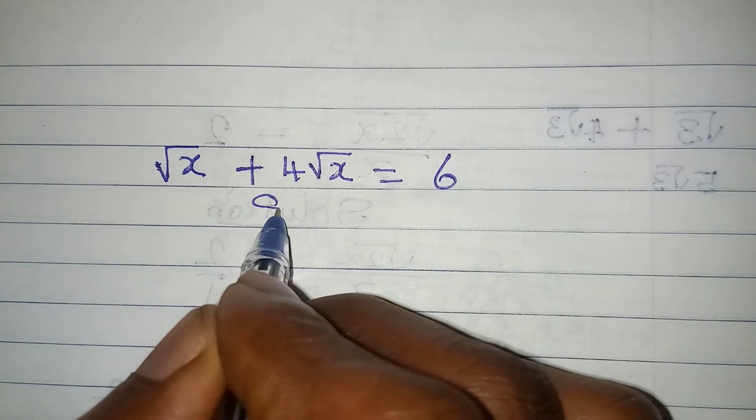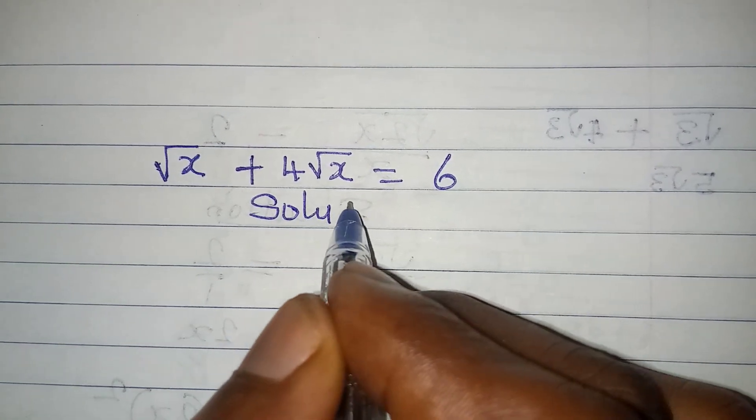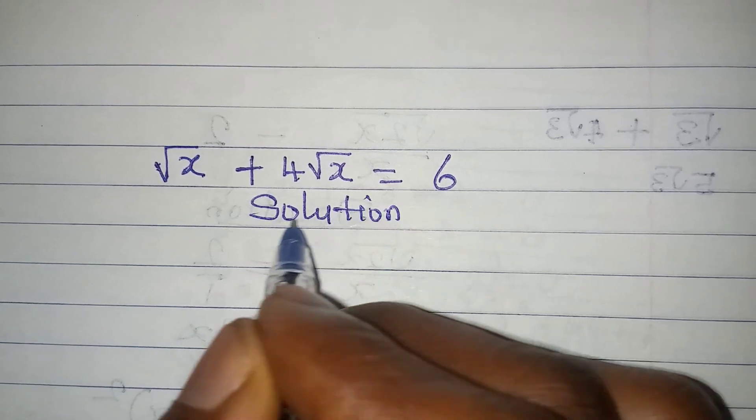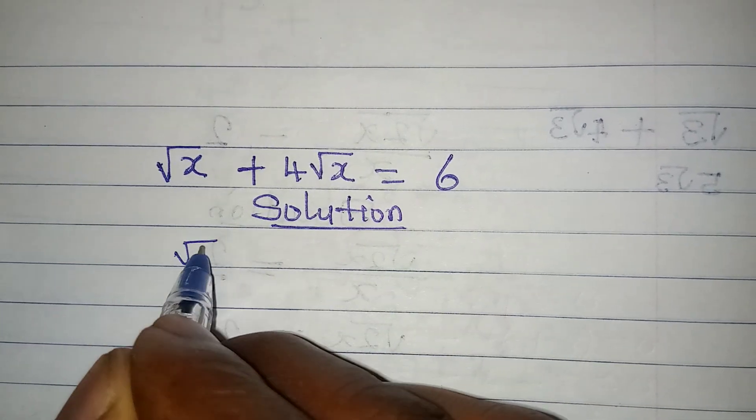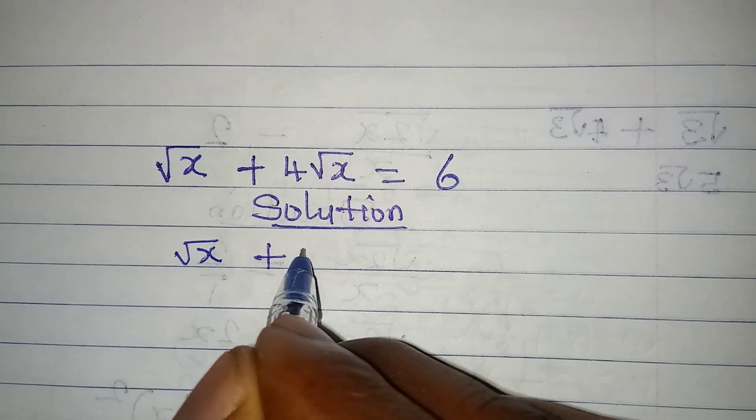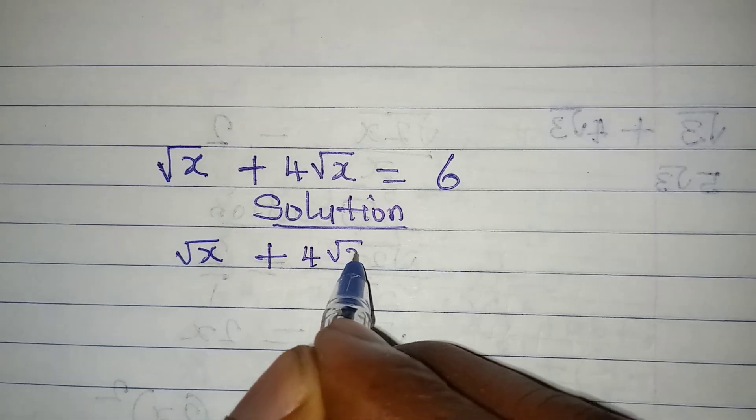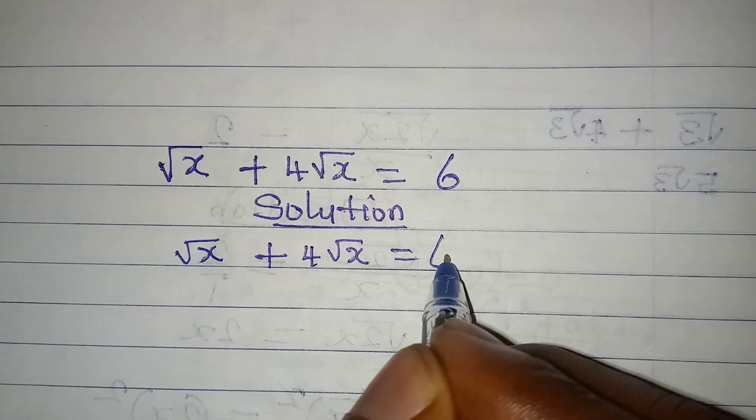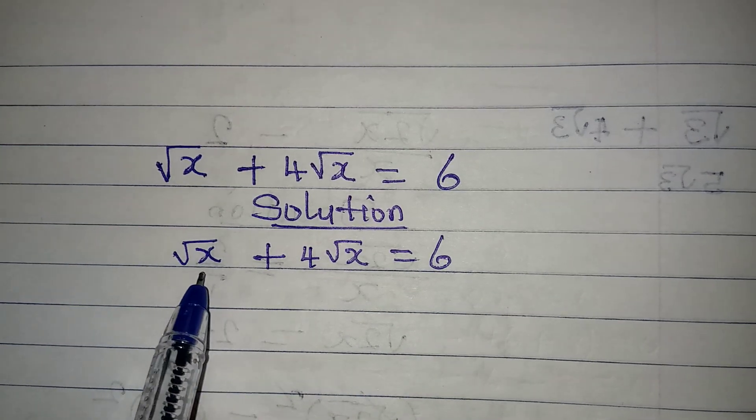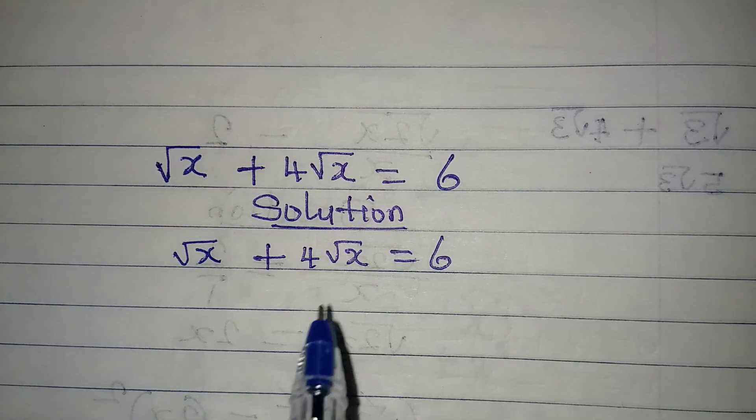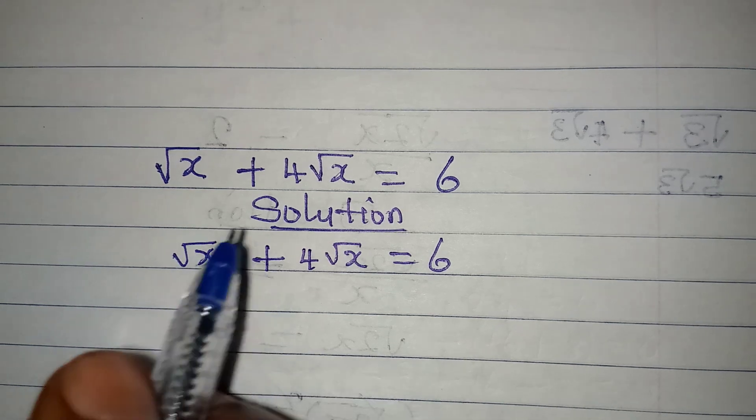Hello everyone, let's provide the solution to this problem: square root of x plus four square root of x equals six. What we're expected to do here is find the value of x.